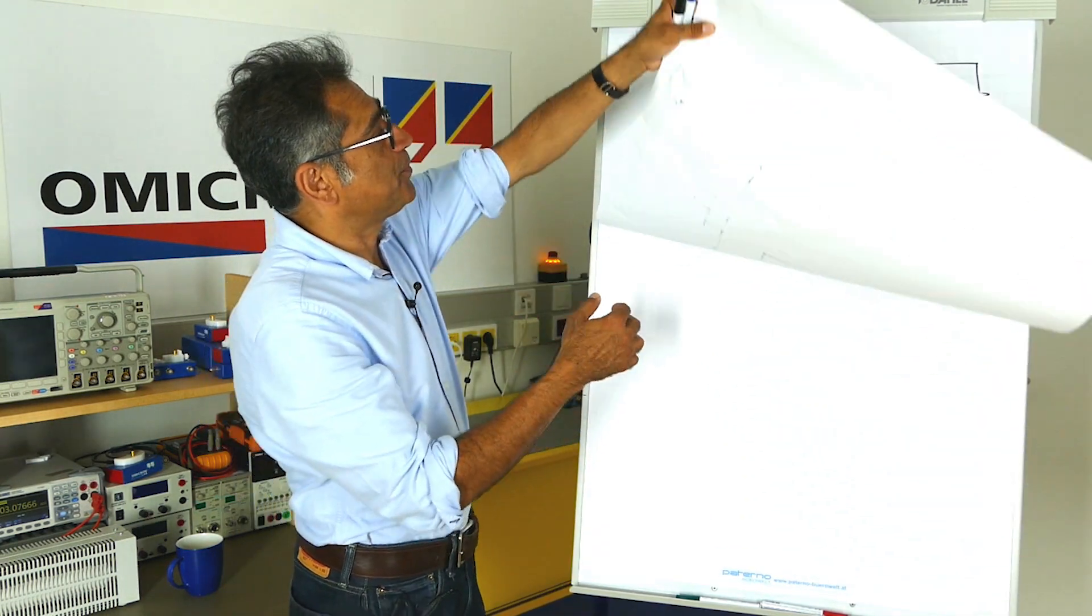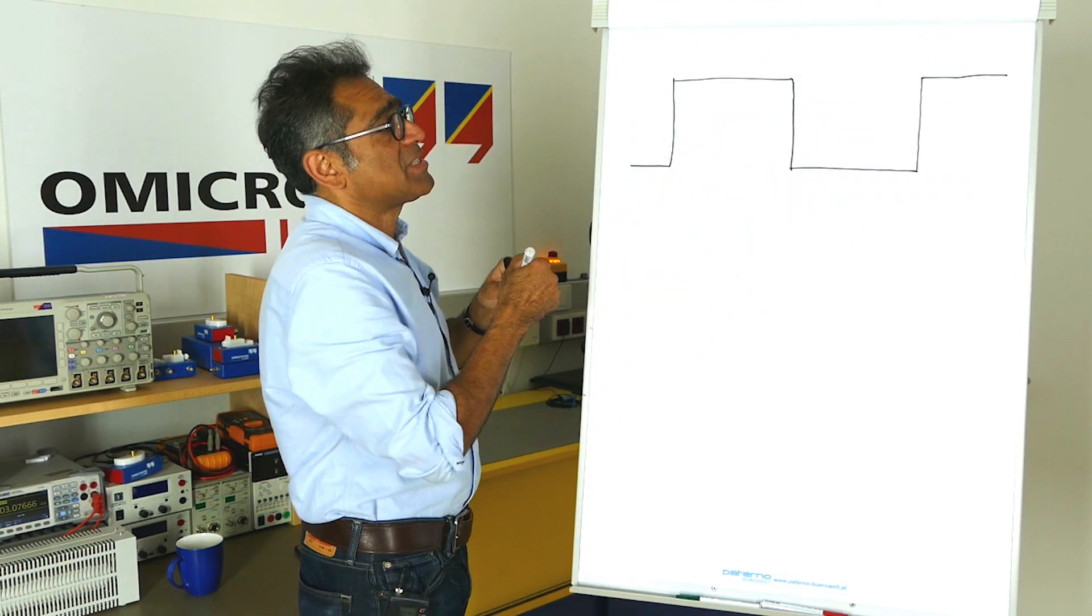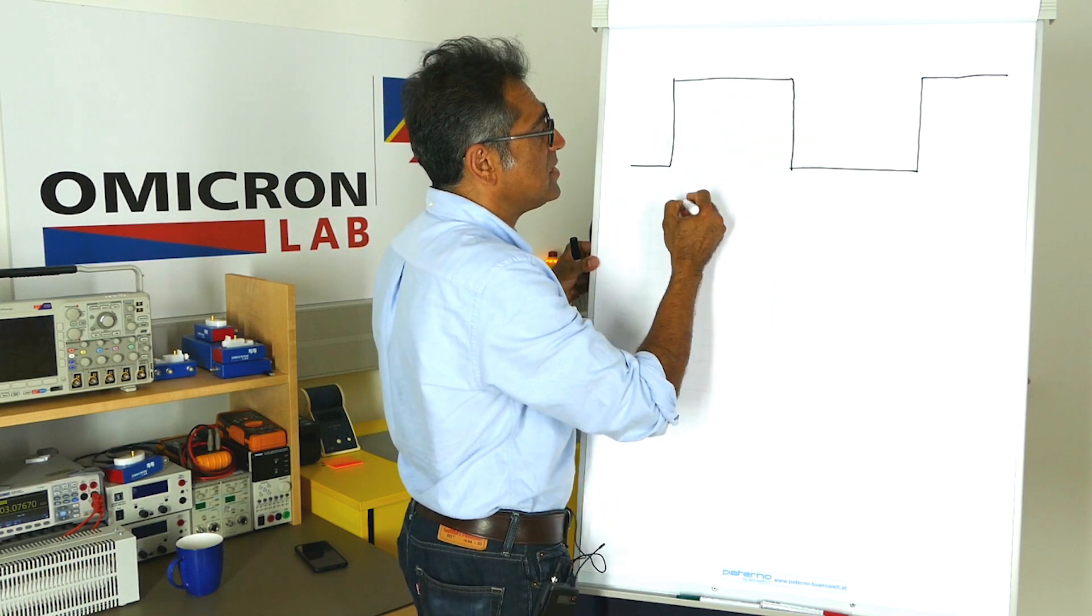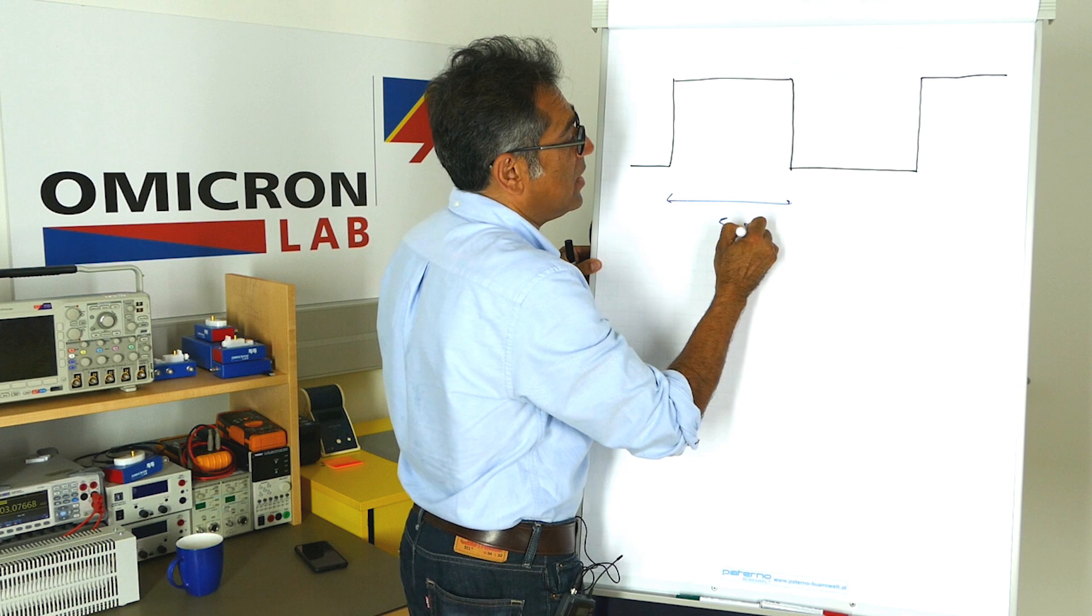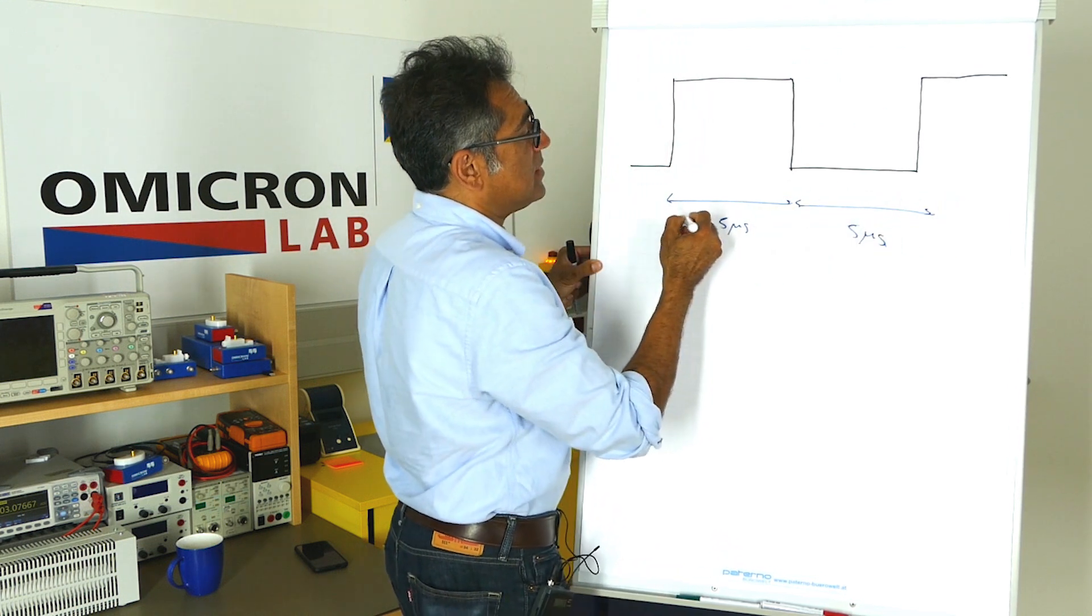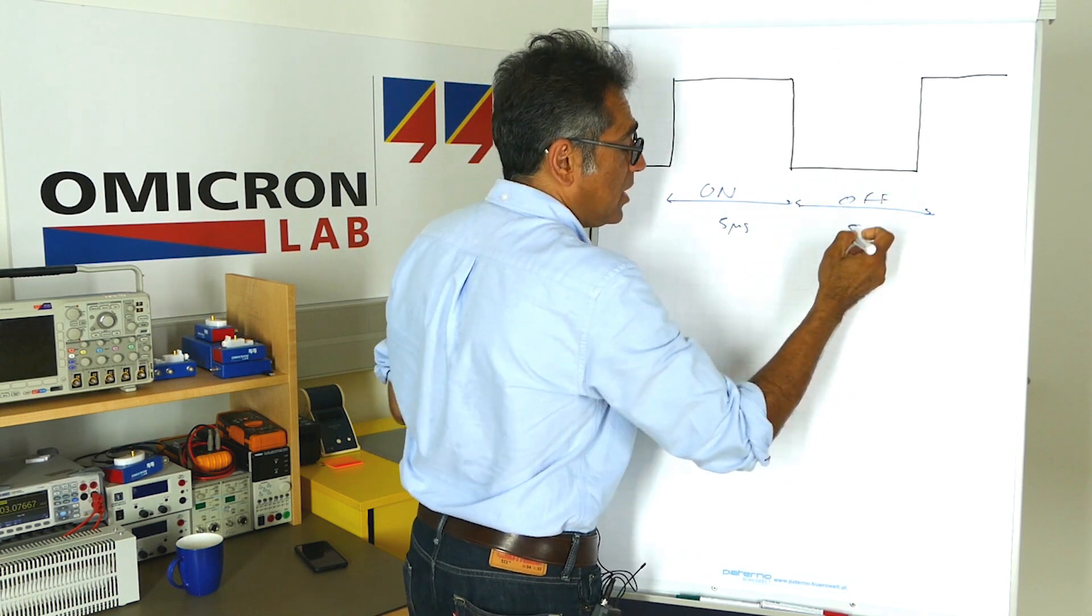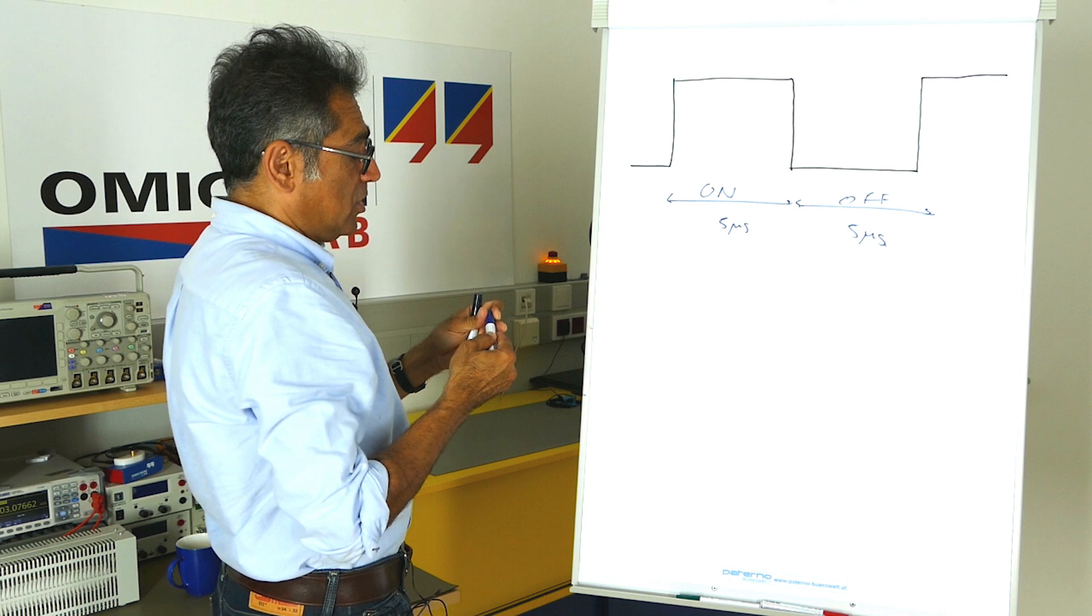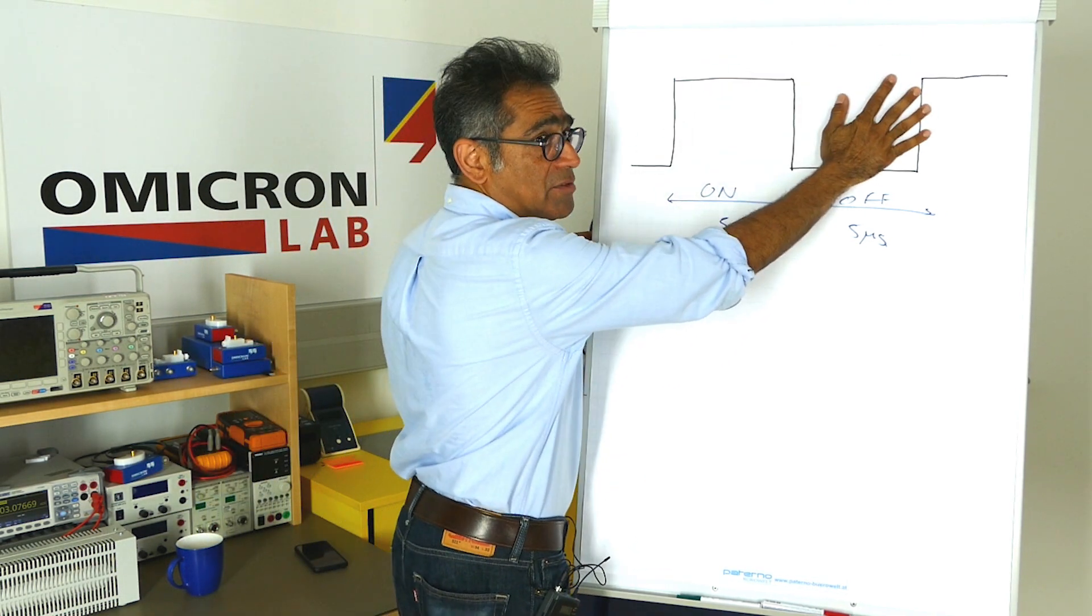So if you go to the next page, let's assume we've got a duty like this. Let's for simplicity assume it's 50%. Let's say from there to there is five microseconds and from there to there is also five microseconds. This is the on period and this is the off period. In a buck converter you deliver power during this period and you don't deliver power during that period.